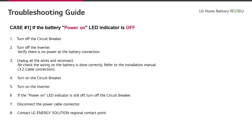Case number 1: the battery shows power on, but the LED indicator is off. Turn off the circuit breaker, then turn off the inverter. Verify there is no power at the battery connection. Unplug all the wires and reconnect, checking that the wiring on the battery is done correctly — refer to the installation manual. Turn on the circuit breaker again, then turn on the inverter again. If the power is on and the LED indicator is still off, turn off the circuit breaker, disconnect the power cable connector, and contact LG Energy Solution regional contact point.